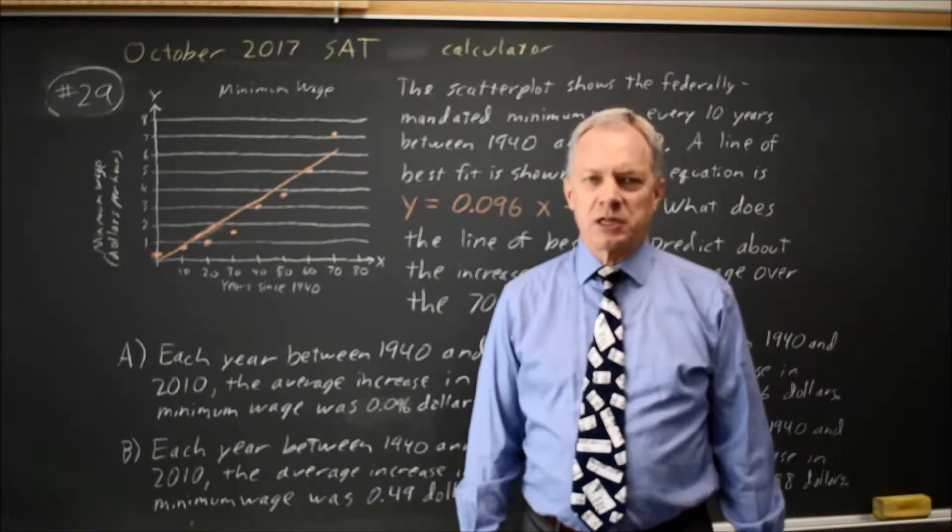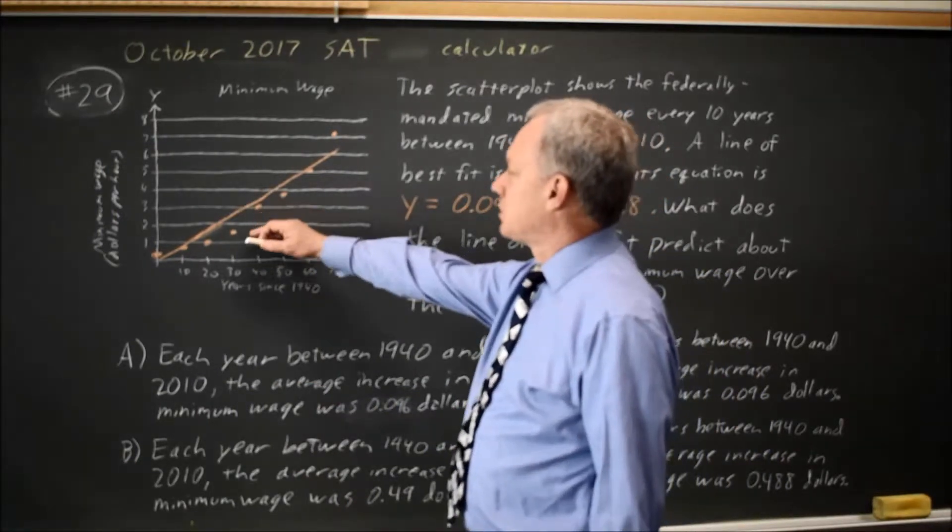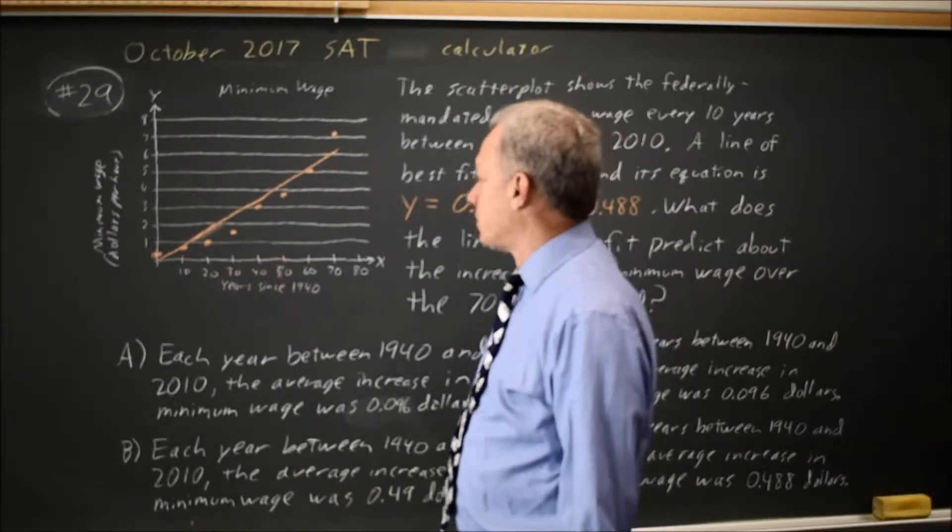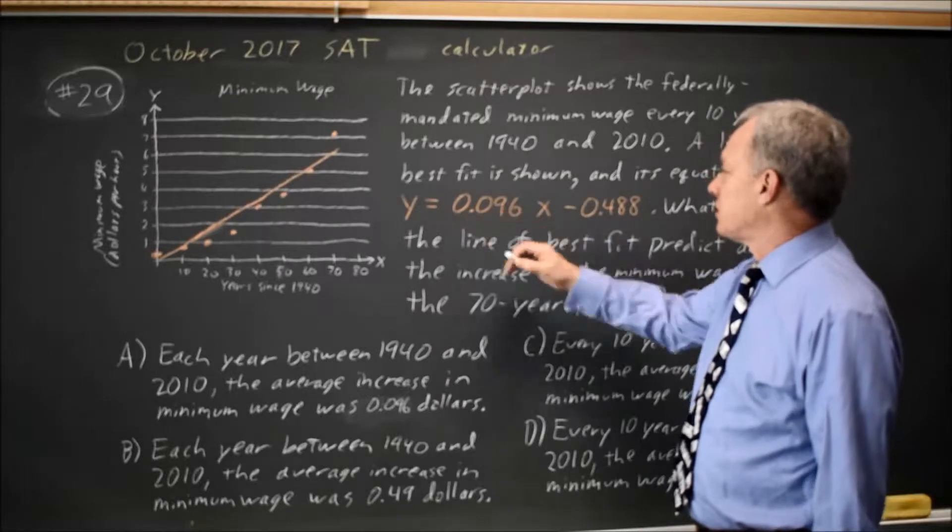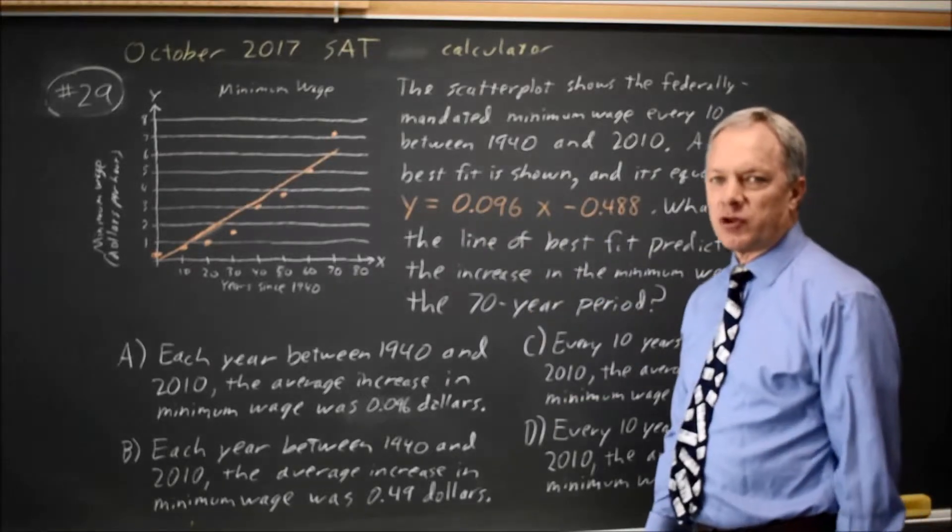This is calculator question number 29. College Board gives us a scatter plot with a line of best fit for minimum wage, and they give us the equation for the line of best fit, y equals .096x minus .488.